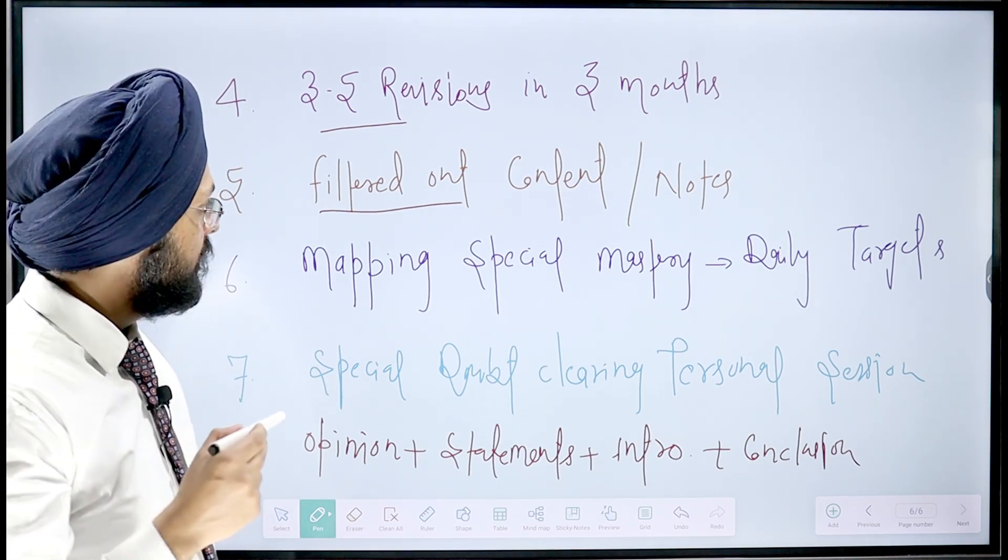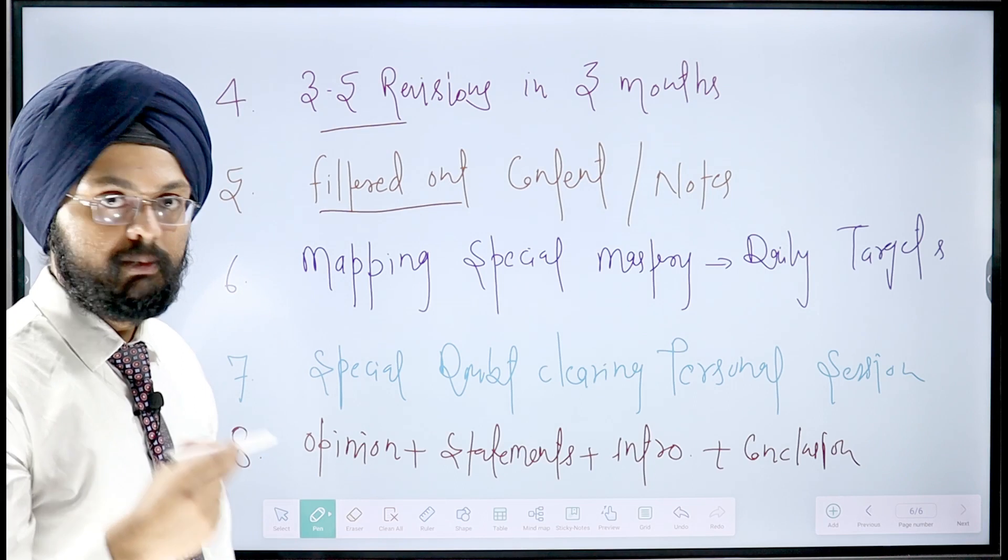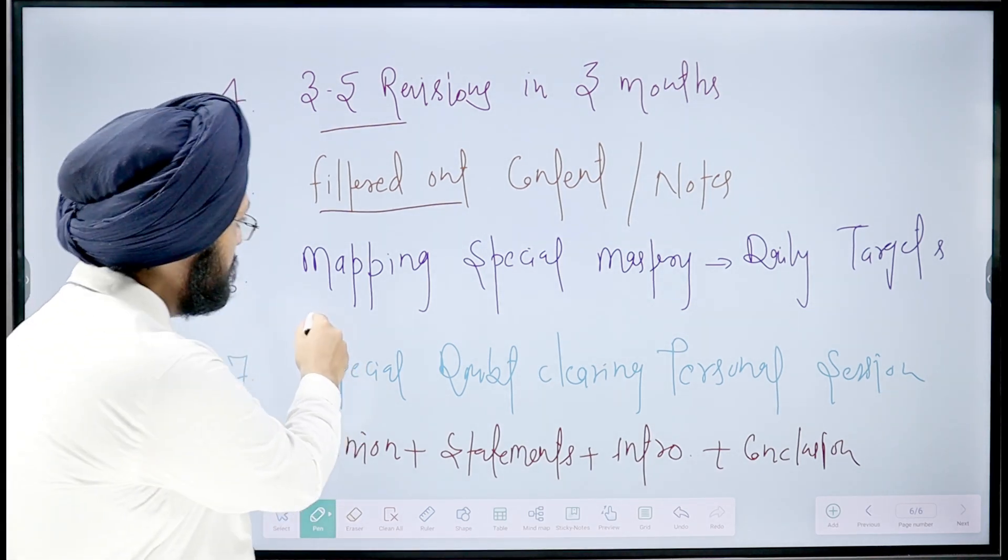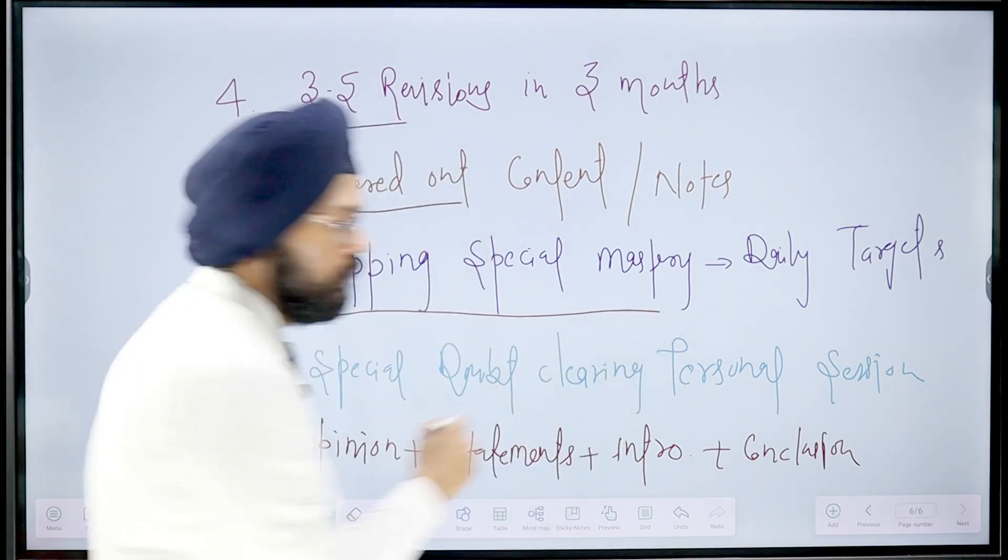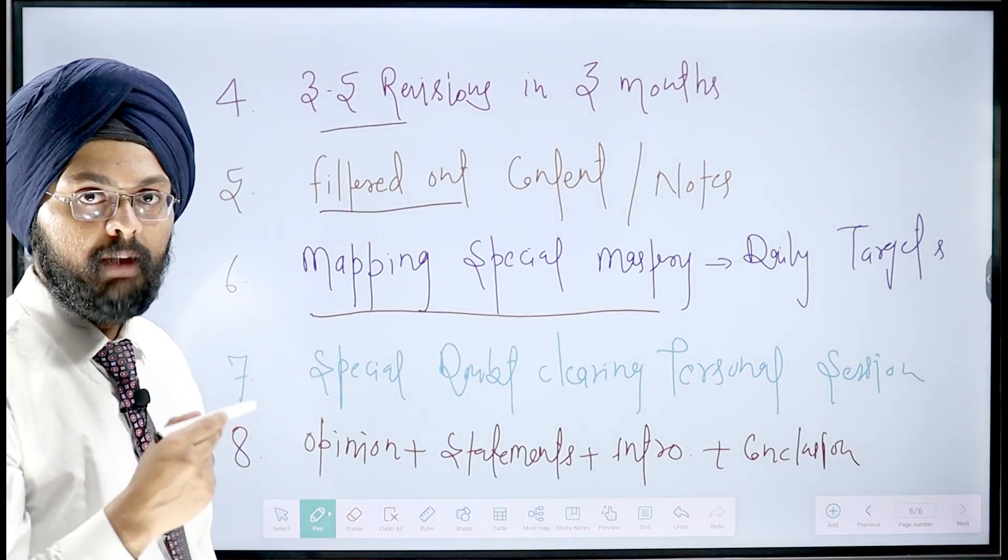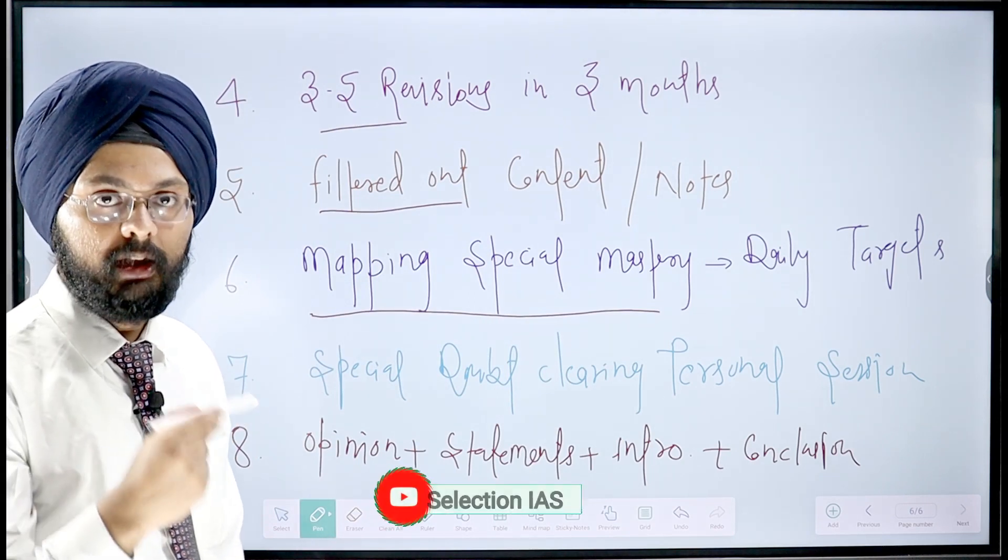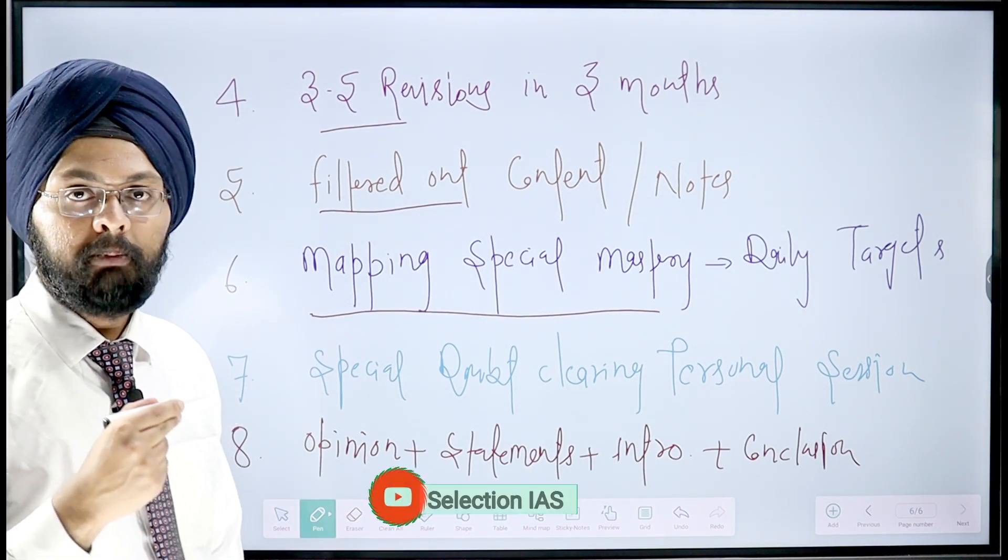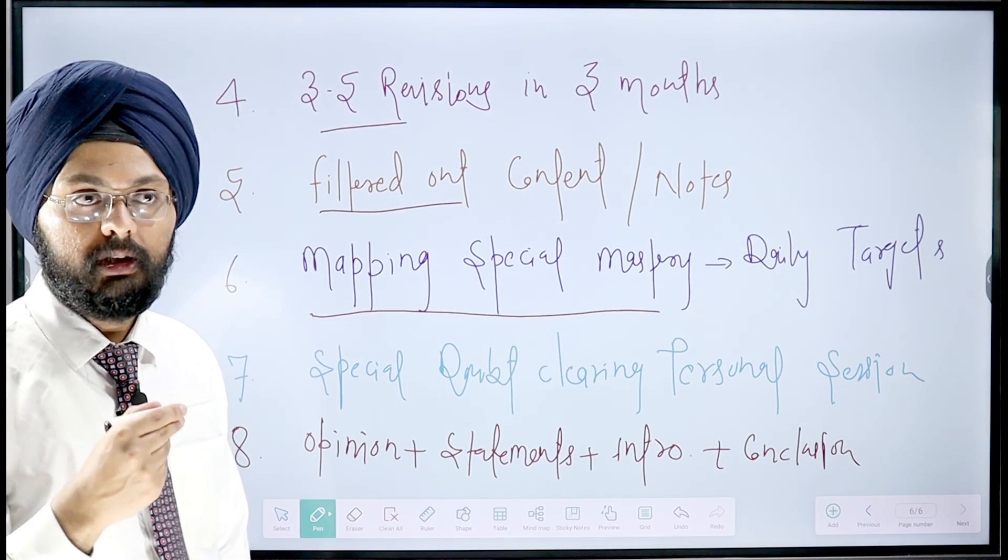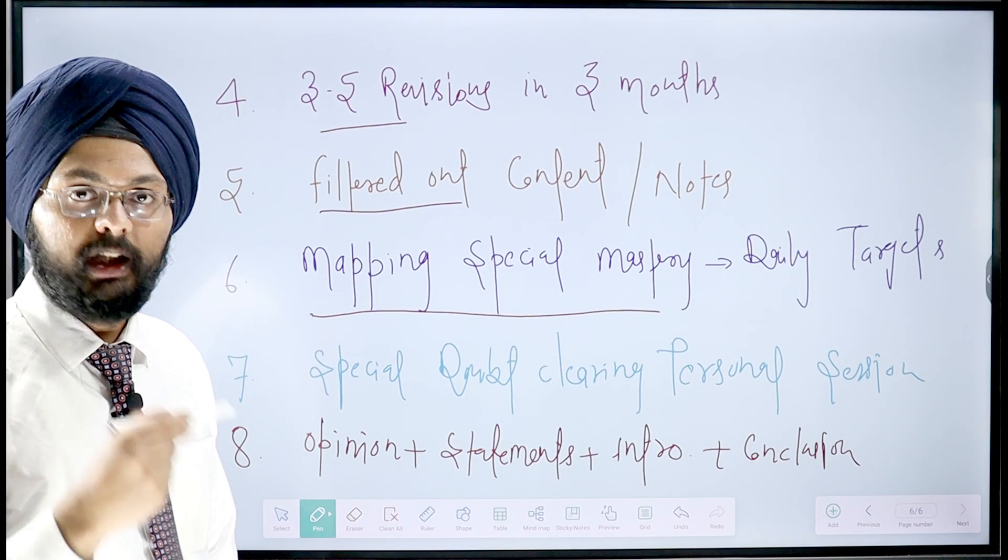The important aspect of Kalam Azad sir's training program is mapping special mastery. Sir used to give us daily targets like daily 10 sites on map, and sir used to provide highly good content which can be written in a very short time. Mapping constitutes approximately 10 percent of your whole optional papers, so you should have good concise notes regarding mapping.